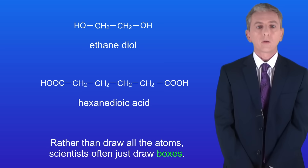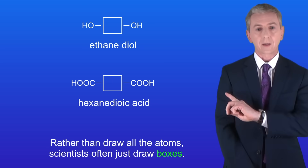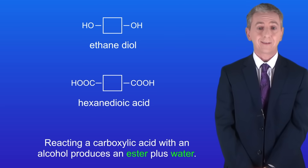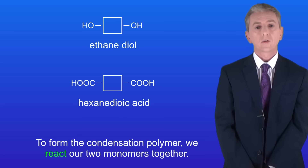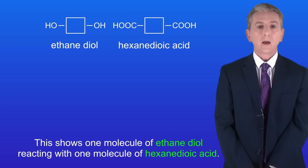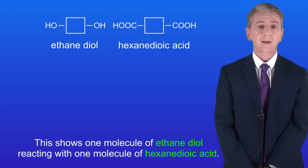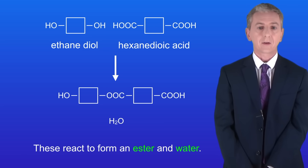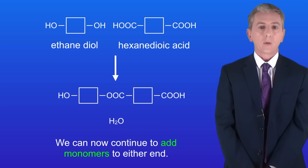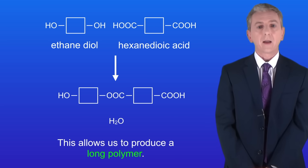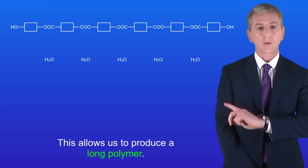Rather than draw all the atoms, scientists often just draw boxes. In the video on carboxylic acids we saw that reacting a carboxylic acid with an alcohol produces an ester plus water. So to form the condensation polymer we react our two monomers together. One molecule of ethane diol reacts with one molecule of hexane diolic acid to form an ester and water. We can then continue to add monomers to either end, allowing us to produce a long polymer.